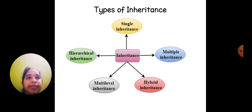Types of inheritance. We have five types of inheritance available in C++: single inheritance, multiple inheritance, hierarchical inheritance, multi-level inheritance, and hybrid inheritance.